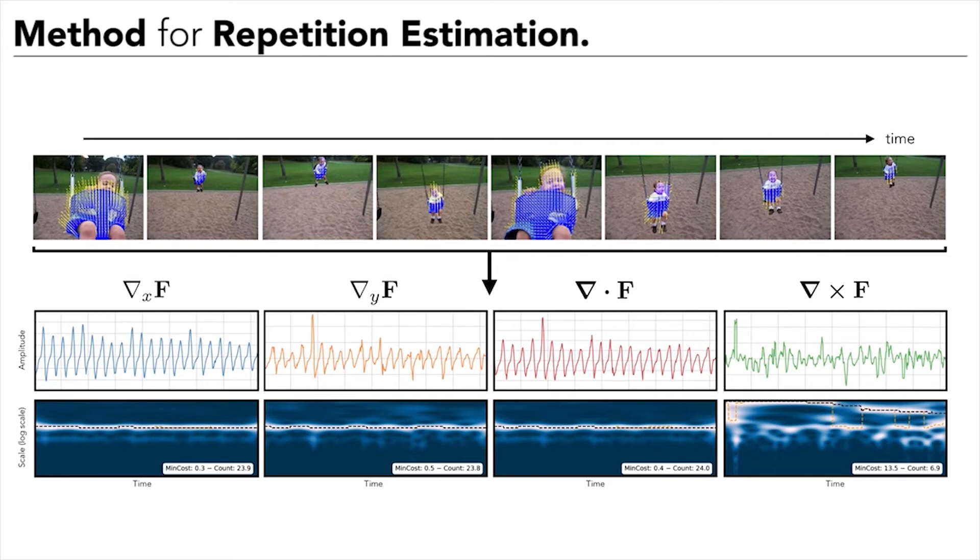Next, the representations are max-pooled over the segmentation mask to produce six time-varying one-dimensional signals. We use the continuous wavelet transform to decompose these signals into time-frequency spectra and estimate non-stationary repetition for each of them.